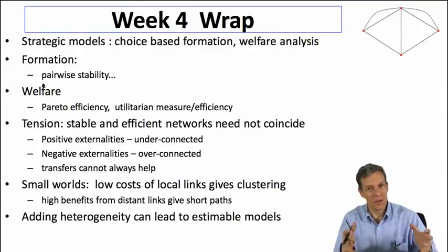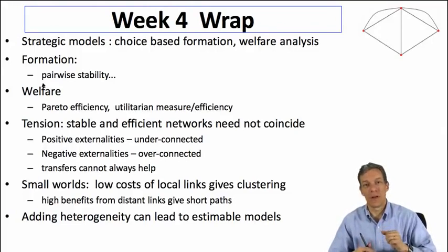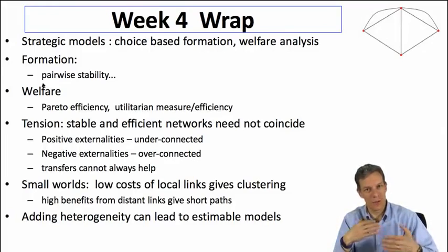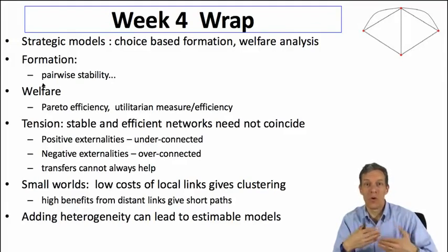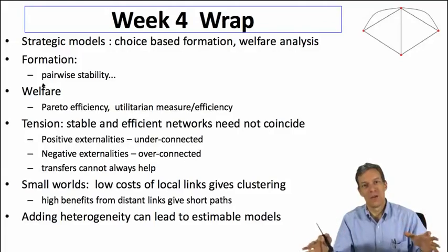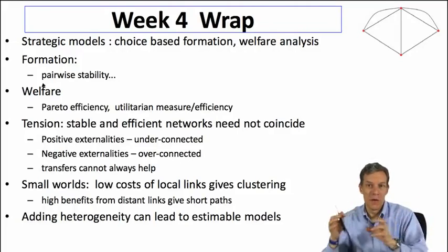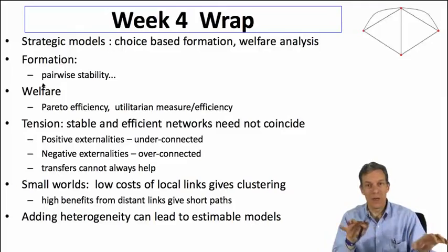If you've got both positive and negative externalities, it could be more complicated. Transfers are not always going to help — people could offer bribes or favors to others to form links, and we can think of explicit bargaining, like when countries sign treaties where complicated things exchange hands. Transfers can help, but they don't necessarily always help given the number of externalities and the complicated patterns in which they can arise.